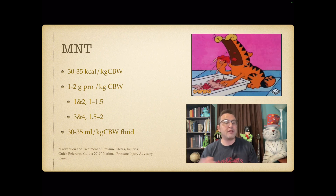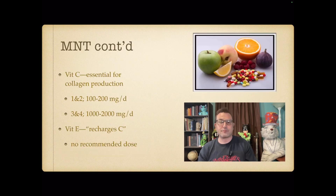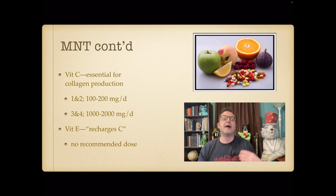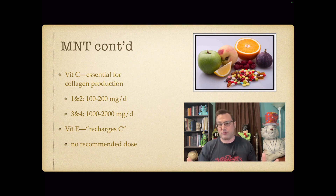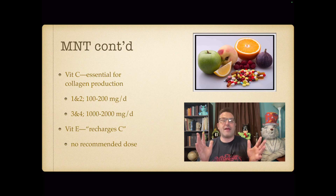For protein, at partial thickness (stage 1 or 2) the recommendation is 1 to 1.5 grams per kilogram of body weight; for full thickness injury, 1.5 to 2 grams per kilogram. For fluids, the recommendation is approximately 1 milliliter per calorie — or 30 to 35 mL/kg. For micronutrients, vitamin C is essential for collagen production: 100–200 mg/day at partial thickness, and 1,000–2,000 mg/day at full thickness. It's difficult to overdose on vitamin C — if the body doesn't use it, it's flushed out.